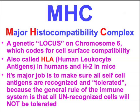The MHC codes for all cell surface compatibility. So when your immune cells have to recognize pathogens as something they should attack versus recognizing your own cells as something they shouldn't attack, that's all determined ultimately by the MHC. The human leukocyte antigens, or the HLA system — and the H2 system in mice — are basically antigens on the surface, all ultimately coded by that relatively small area of chromosome 6. The overall job of the MHC is to make sure all cell antigens are recognized and tolerated; if they are not, they will be attacked. And if the MHC fails and attacks things which shouldn't be attacked, that's what we call the family of autoimmune diseases.